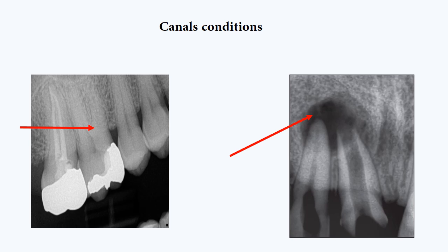The next reason is to find out canal conditions, such as calcified, narrow, or wide apex of immature teeth. In the first picture, you'll see that the pulp is almost calcified in the mesial canal. In the second picture, you'll see how wide the canal is. Both have different treatment plans, so that's why X-ray is mandatory.